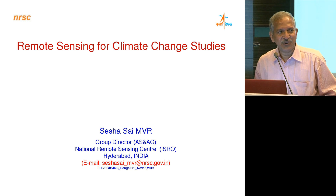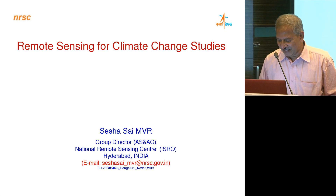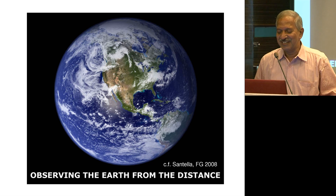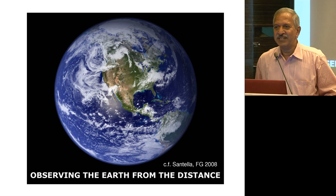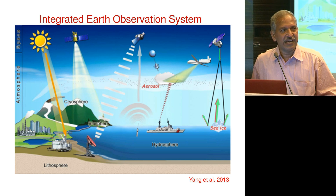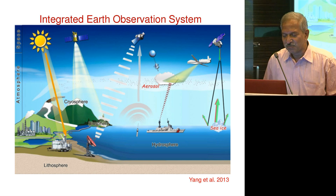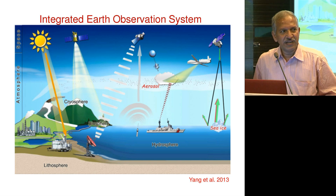In that context, my presentation is going to be around what remote sensing is offering to climate change studies — that is the main essence of the presentation. All of you know very well that observing the earth from a distance is what is called remote sensing, and once we are talking of the earth system, it is not the landmass alone — it is the atmosphere, the oceans, everything all put together. We need to take observations covering all these different components of the earth system.